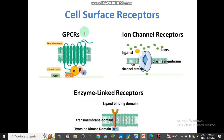The cell surface receptors: there are three important types. G-protein coupled receptors are seven-membered transmembrane proteins embedded in the membrane, with alpha, beta, and gamma protein subunits. They convert GDP to GTP, and then generate secondary messengers such as cyclic adenosine monophosphate (cAMP) or cyclic guanosine monophosphate (cGMP). We will discuss the function of GPCRs in the next slides.